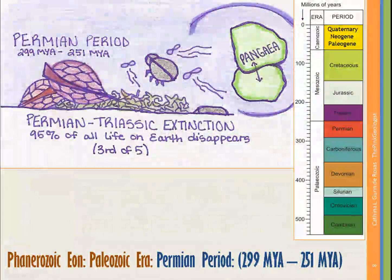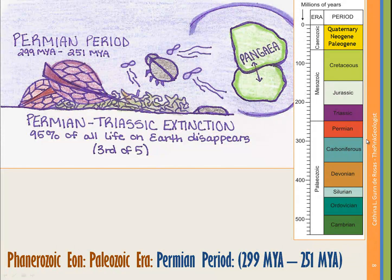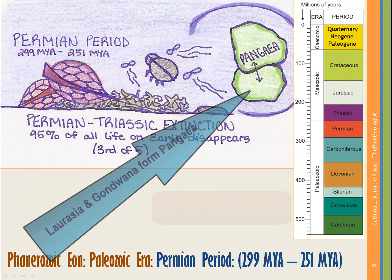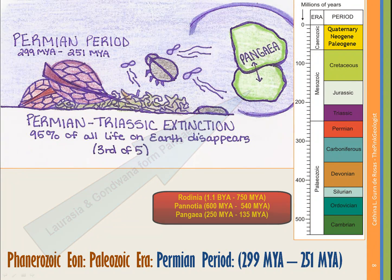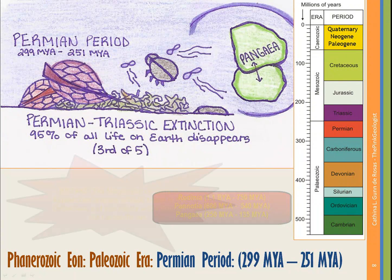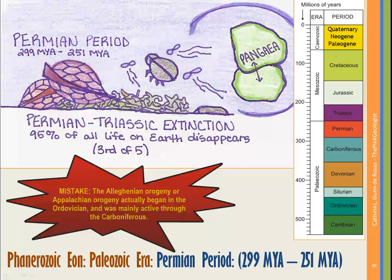The Permian period is the last of our Paleozoic Era, spanning from 299 million years ago to 251 million years ago. During this period we see Pangaea unite — the third supercontinent, after Rodinia and Pannotia. As that happens, we also see an orogeny that begins to form the Appalachians — very old, rounded, eroded mountains in the eastern part of the U.S. — with their formation beginning back in the Permian.